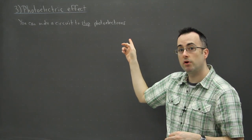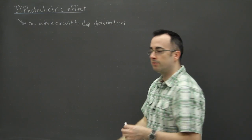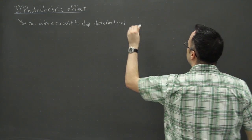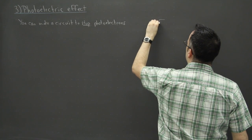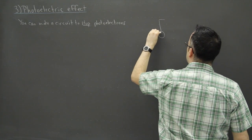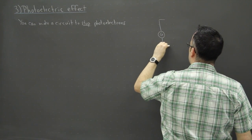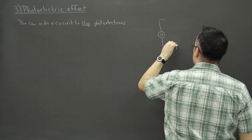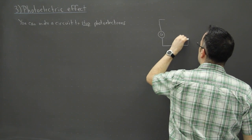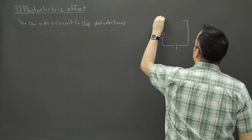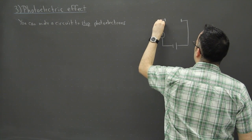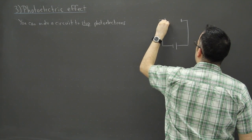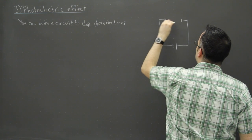But now you can actually make a circuit, this is a separate situation where you can make a circuit that actually stops the photoelectrons. This can be useful for a certain reason I'll show you. So I'm going to draw some sort of circuit with maybe a galvanometer which could be something that can actually measure the electricity coming through.